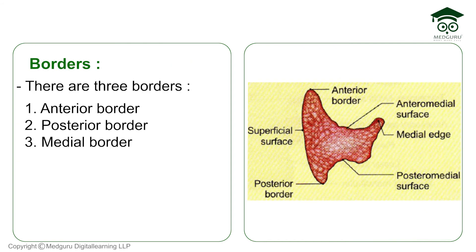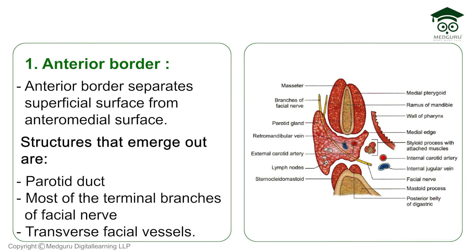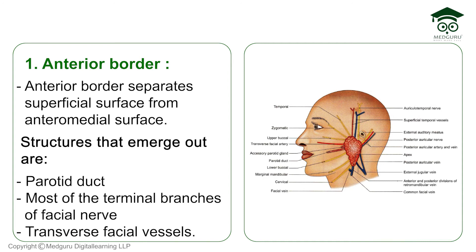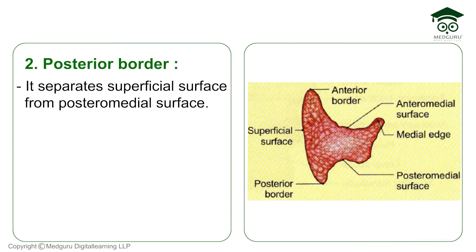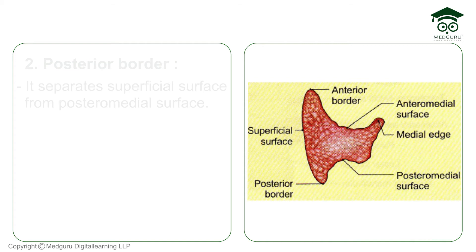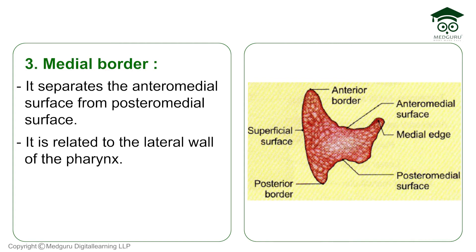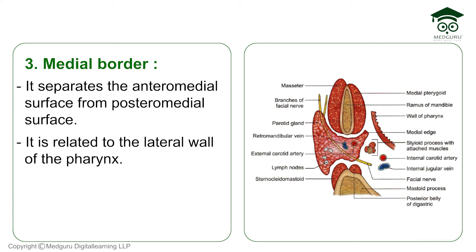There are three borders. The anterior border separates the superficial surface from the anteromedial surface; from it emerge the parotid duct, most terminal branches of the facial nerve, and the transverse facial vessels. The posterior border separates the superficial surface from the posteromedial surface. The medial border separates the anteromedial surface from the posteromedial surface and is related to the lateral wall of the pharynx.